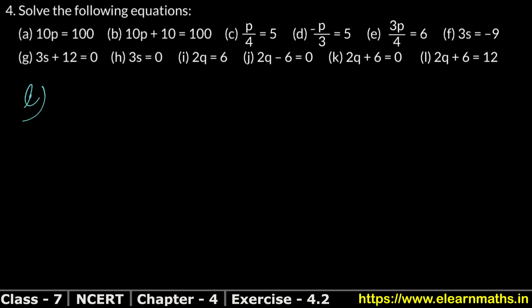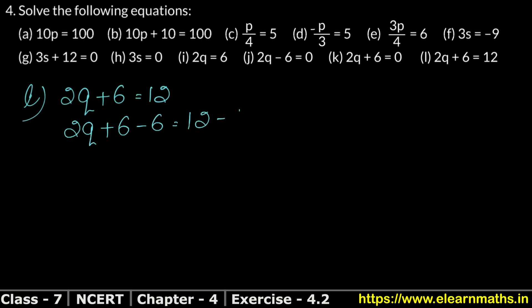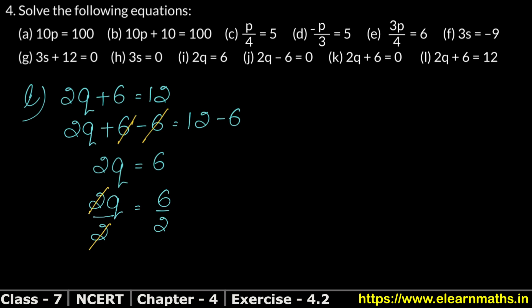The last part, Part L, is: 2q plus 6 equals 12. We subtract 6 from both sides, so plus 6 minus 6 cancels, and 12 minus 6 equals 6. So 2q equals 6. Now q is multiplied by 2, so we divide both sides by 2. The 2s cancel on the left, and 2 times 3 is 6. So q equals 3 is the answer.